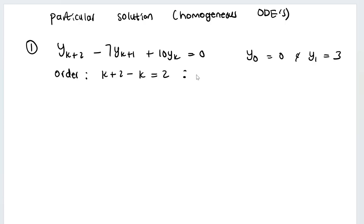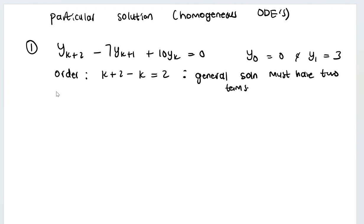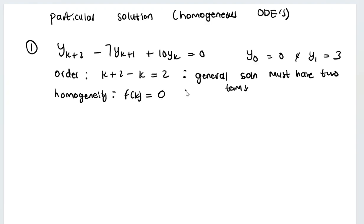This means our general solution or complementary function must have two terms. Now, is the equation homogeneous? Looking at f(k), the function on the right-hand side is zero, therefore it is homogeneous.